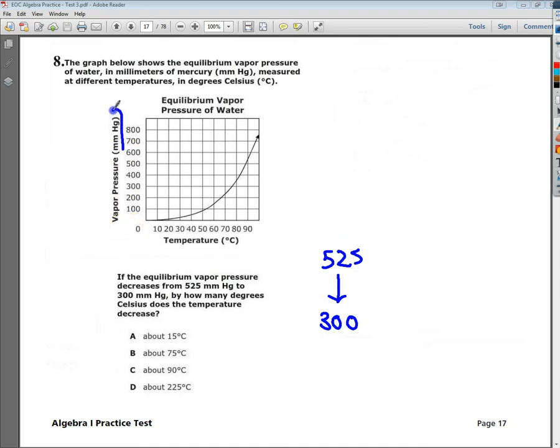Here's my millimeters of mercury, not milliliters, so I need to figure out where 525 is to make a little dot. Somewhere probably right around in here. And then I'm going to look at where 300 is, somewhere right around in here maybe. Now I have my two spots.